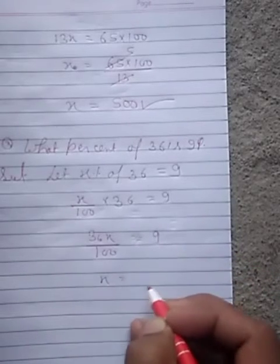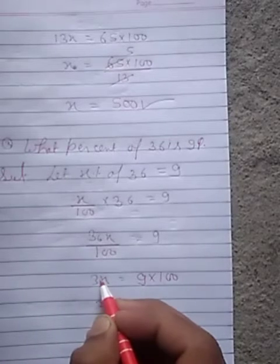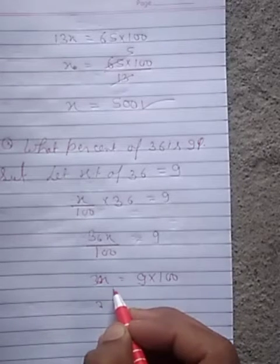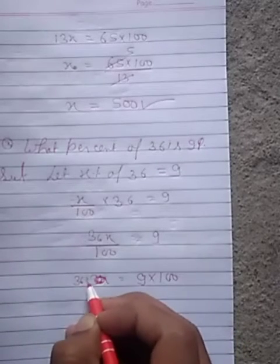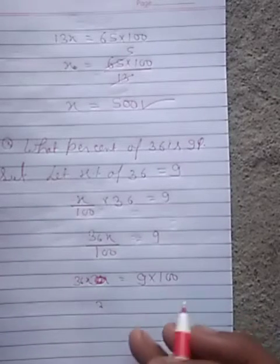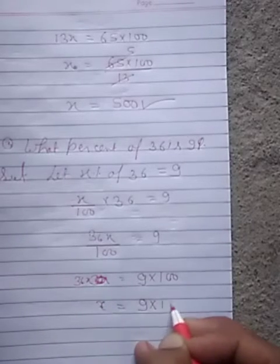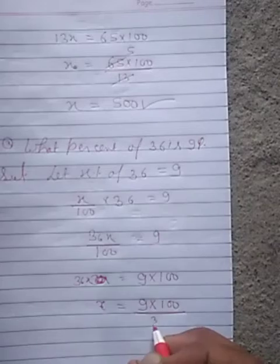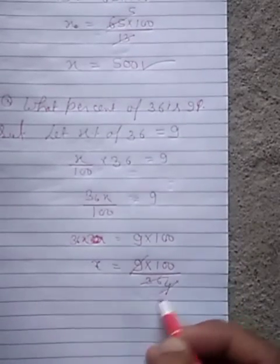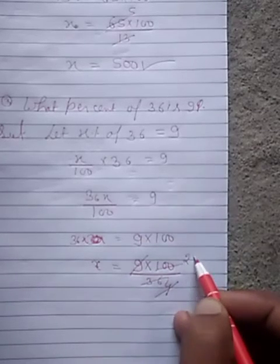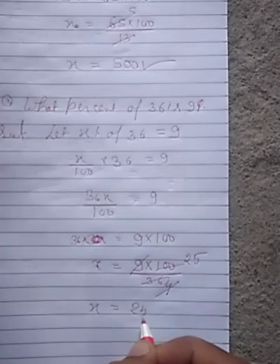X is equal to student 9 into 100. Clear, sorry student, 36X is equal to 9 into 100. So X is equal to 9 into 100 upon 36. And reduce this number, 9 for 36. 4 divided by 100 we get 25.